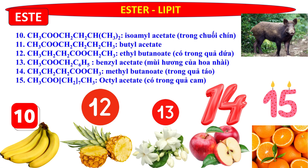10. Isoamylacetate — mùi chuối chín. 11. Butylacetate. 12. Ethylbutanoate — có trong quả dứa. 13. Benzylacetate — mùi hương quả hoa nhài. 14. Methylbutanoate — trong quả táo. 15. Octylacetate — có trong quả cam.